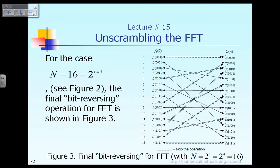In this picture, based on the example, we have the number of data points N equal to 16. And 16 can be expressed as 2 to the power r, where r is equal to 4. Because r is equal to 4, that means for this computation corresponding to 16 data points, we need to do 4 intermediate vectors corresponding to level l equal to 1, 2, 3, up to level l equal to r, which is equal to 4.